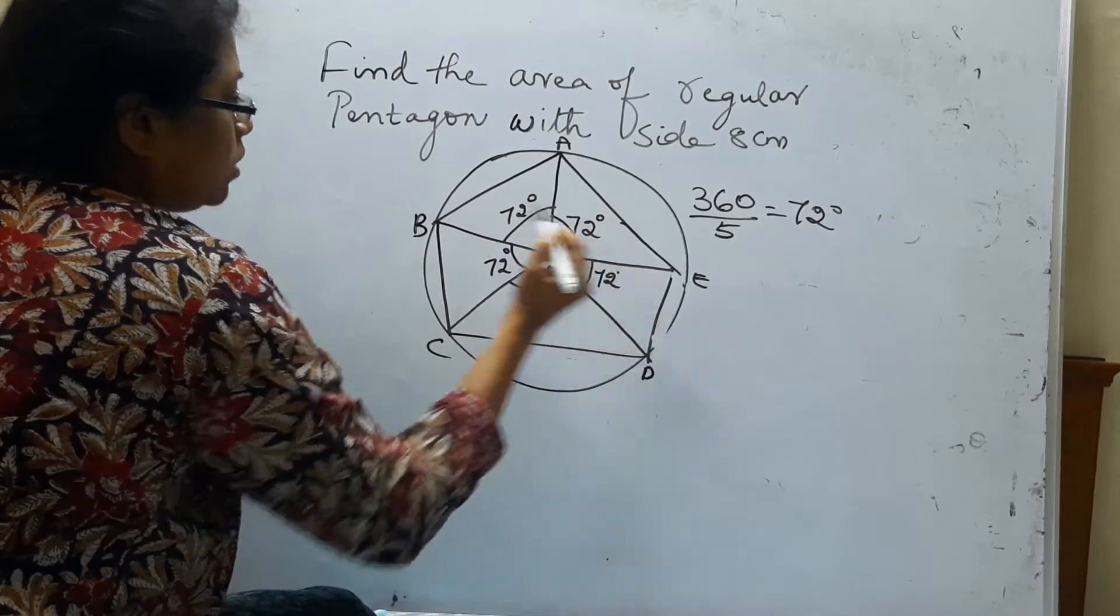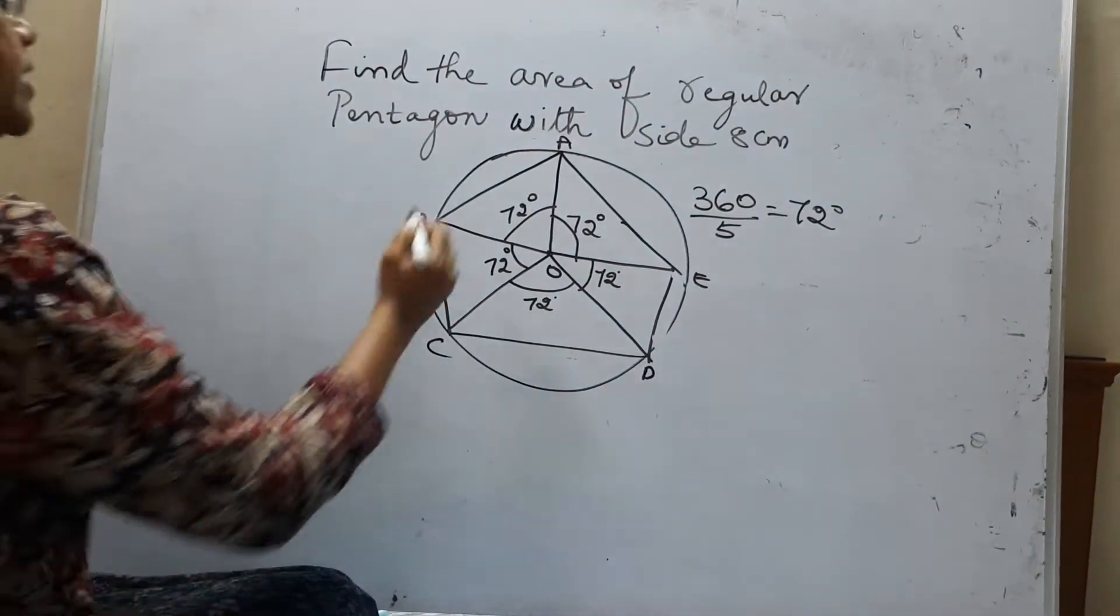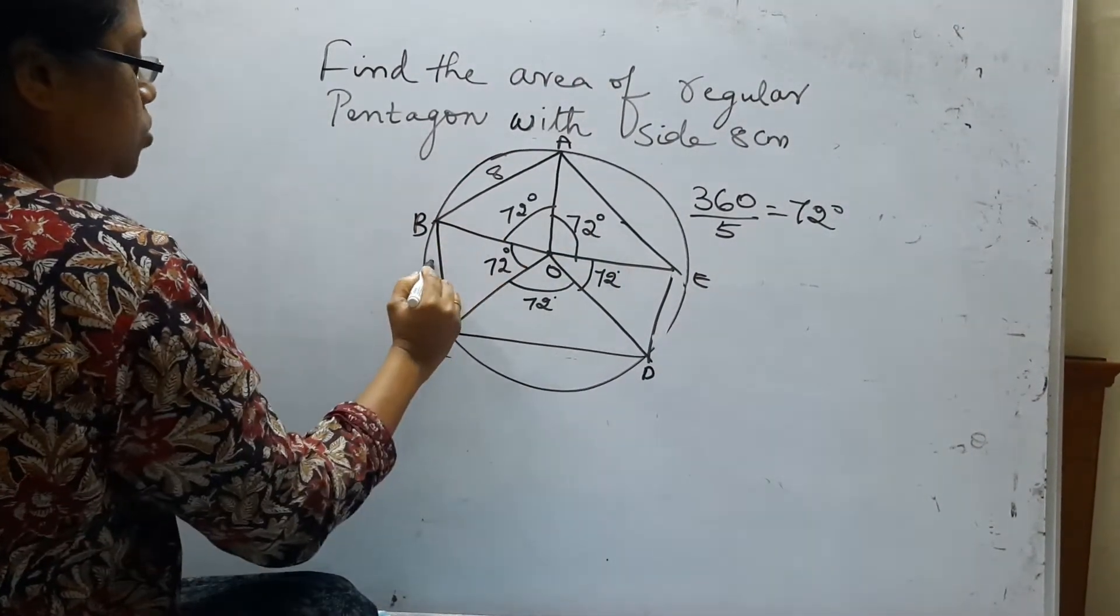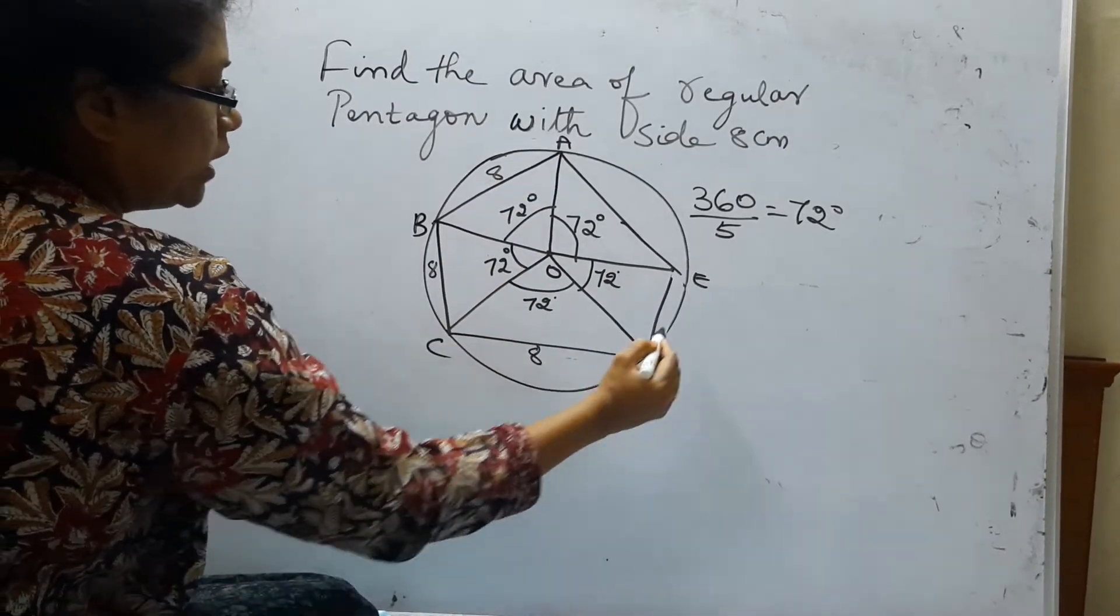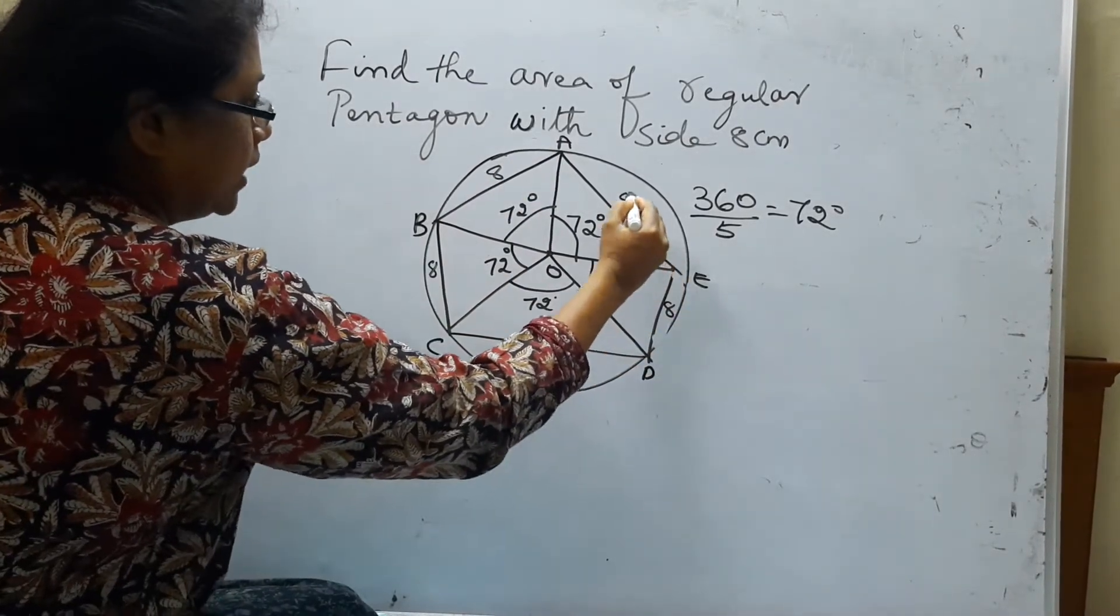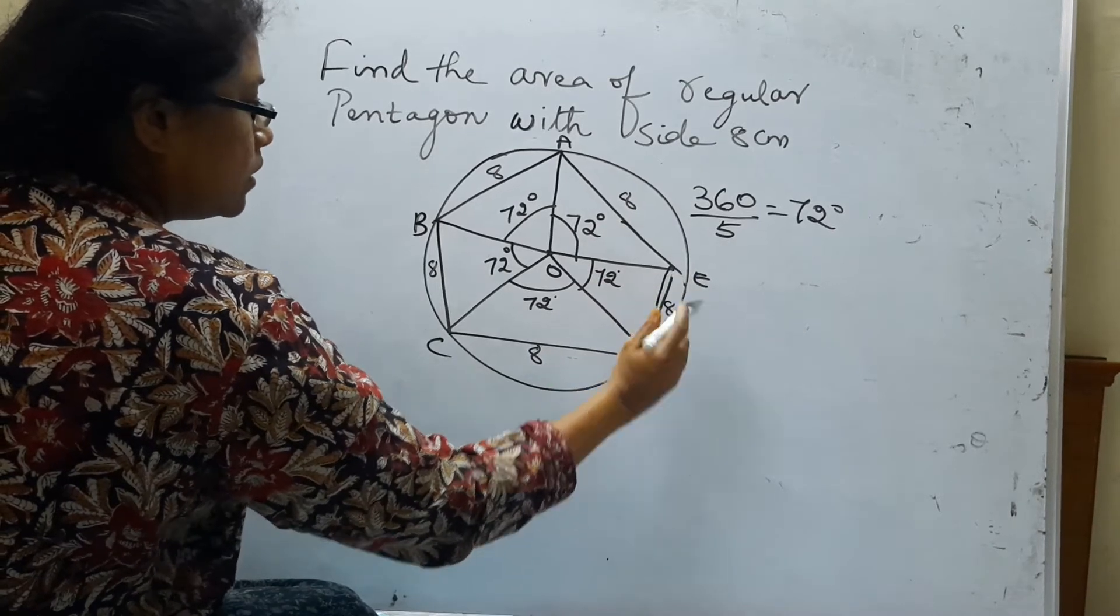Now what are we given? We are given the side is 8 cm. So AB, BC, CD, DE and EA, all are 8 cm.